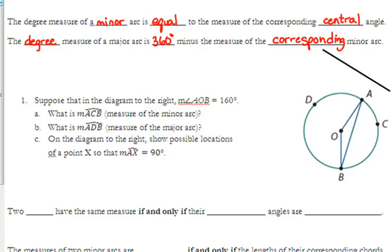They tell us in this diagram to the right, the measure of angle AOB is 160 degrees. So AOB is this angle right here. So we've got 160 to the right of O. So put it in there however you can. So they ask us, what's the measure of arc ACB? Well, 160 is the central angle, so ACB has the same degree measure. It's 160 degrees of the circle.